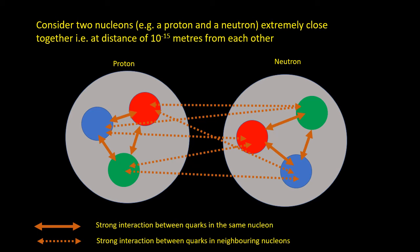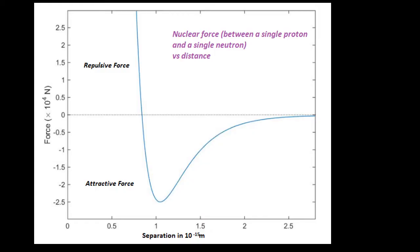This is called the residual strong interaction, or more commonly the nuclear force, and is extremely short range. Its strength is effectively zero at only 3 times 10 to the minus 15 meters, and is actually repulsive at very short distances. It's the nuclear force which binds together protons and neutrons into atomic nuclei.